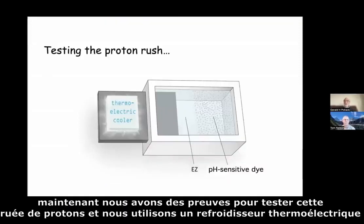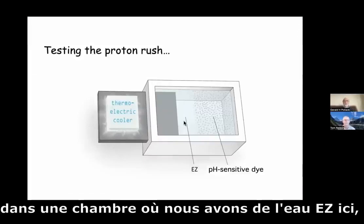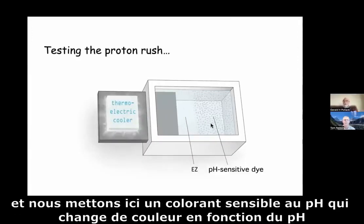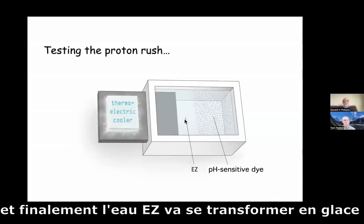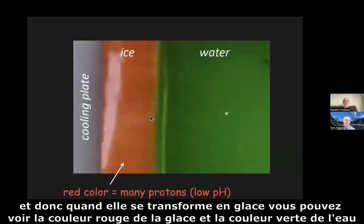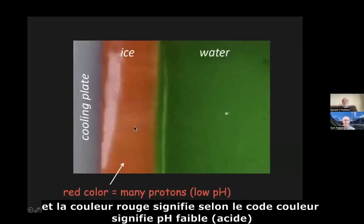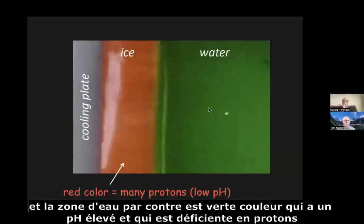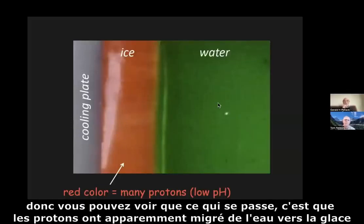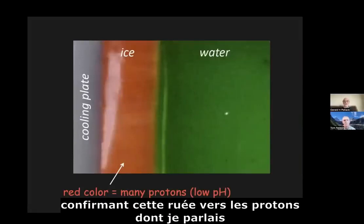We have evidence to test for this proton rush. We use a thermoelectric cooler in a chamber where we have EZ water, and we put a pH-sensitive dye in here, which changes color depending on the pH. The cooling plate is here, and eventually this is going to turn into ice. When it turns into ice, you can see the red color of the ice and the green color of the water. The red color means low pH — so the ice region now contains many protons. The area of water, on the other hand, is green, which is high pH — deficient in protons. The protons have apparently migrated from the water to the ice, confirming this proton rush.